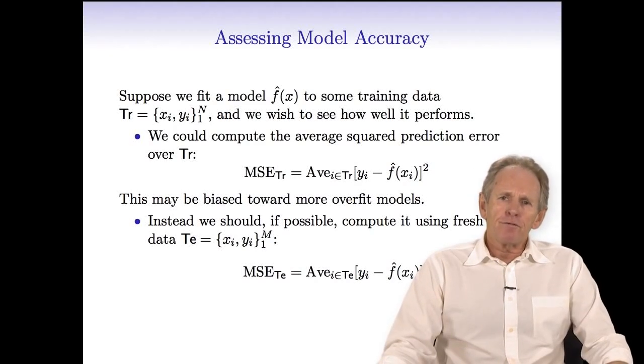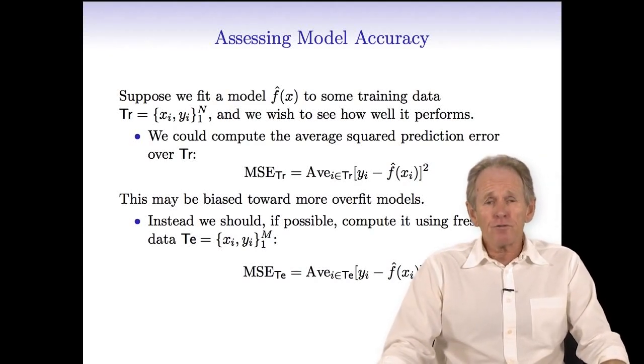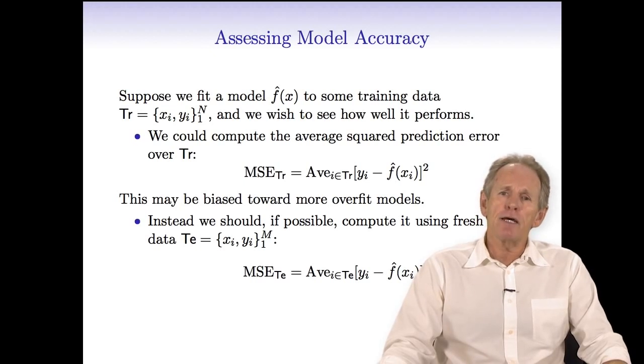We've seen a variety of different models, from linear models which are rather simple and easy to work with and interpret, to more complex models like nearest neighbor averaging and thin plate splines. We need to know how to decide amongst these models, so we need a way of assessing model accuracy and when a model is adequate and when we may improve it.